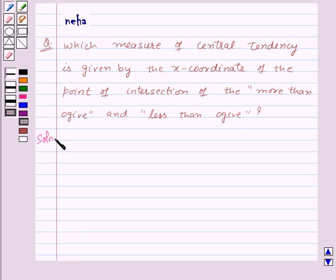We know that ogives are related to median. When we draw both the ogives, that is less than type and more than type, on the same graph, the two ogives intersect each other at a point.